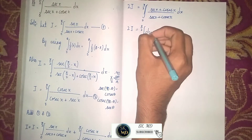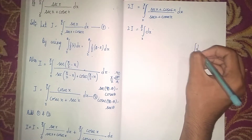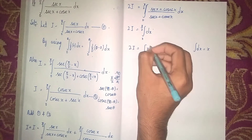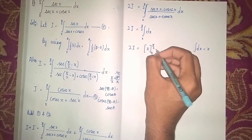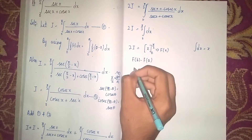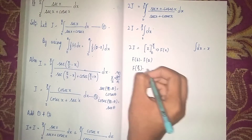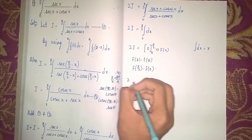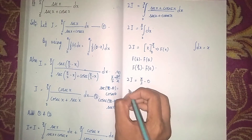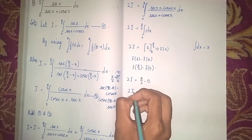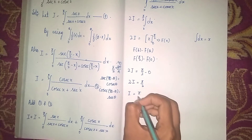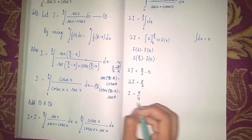Integrating dx gives x, so 2I equals x evaluated with limits 0 to π/2. Applying the limits — upper limit π/2 minus lower limit 0 — gives 2I equals π/2. We need only I, so dividing both sides by 2, I equals π/4, since 2 times 2 is 4.